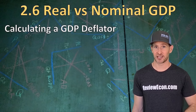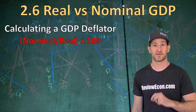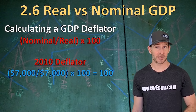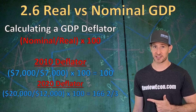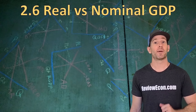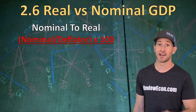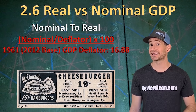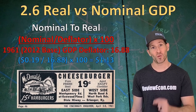Now that we have both nominal and real GDP, we can calculate the GDP deflator: nominal GDP divided by real GDP, times 100. For 2010, since nominal and real are the same, the GDP deflator is 100 — the base year will always have a GDP deflator and CPI equal to 100. For 2020, we take $20,000 divided by $12,000 times 100, giving us a GDP deflator of 166.2. To work backwards, if given a nominal value you want to convert to real, take the nominal divided by the GDP deflator times 100. For example, a McDonald's cheeseburger was 19 cents in 1961 — dividing by the 16.88 GDP deflator using 2012 as a base tells us its real value in 2012 was $1.13.